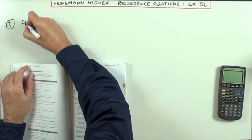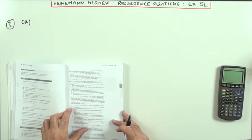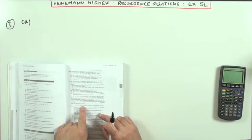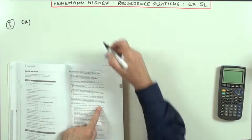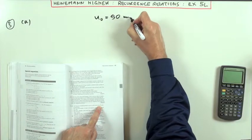Wordy question, but not very much in the way of actual calculations. At 12 noon a patient is given a pill containing 50 units. I'll just take a note of that, that's the initial amount, U₀ is 50 units.